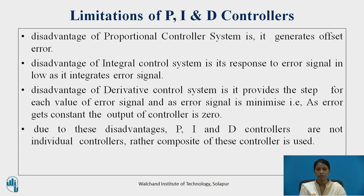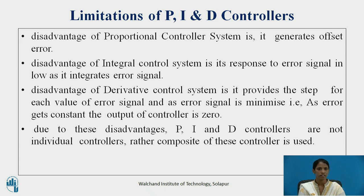Here are the limitations of P, I, and D controllers. A disadvantage of the proportional controller is that it generates offset error. The disadvantage of the integral control system is that its response to the error signal is slow, as the error is integrated for every signal. The disadvantage of the derivative controller is that it provides a step output for each value of error signal, and as the error signal is minimized and becomes constant, the output of the controller is zero.